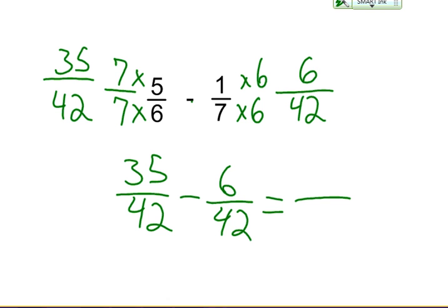So 35 over 42 minus 6 over 42. The denominator is going to stay the same. 35 minus 6 is going to give me an answer of 29.